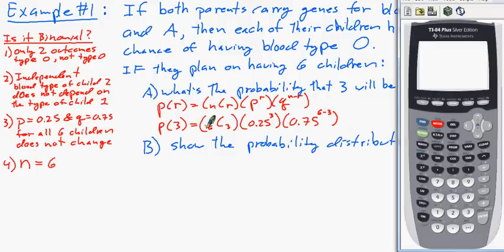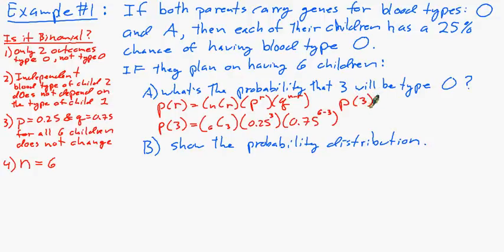A little review of where do you find this combinations function. That would be in math and over here in probability, number three is NCR. But, of course, remember you have to put the N first. I forgot that, so six, math, probability, number three and three. So we get 20 combinations and we'll multiply that times the rest of it. Of course, six minus three is three. Hit enter. And we have the probability of getting three children with type O blood is 0.132 or 13.2% chance that three out of their six children will have type O blood.